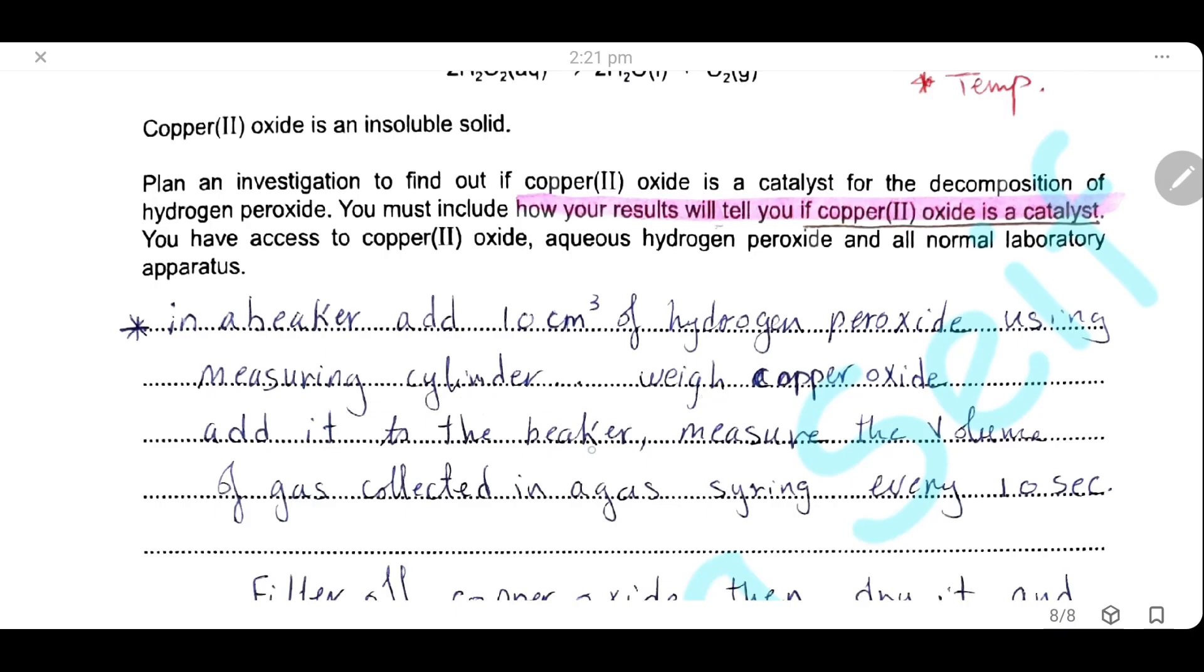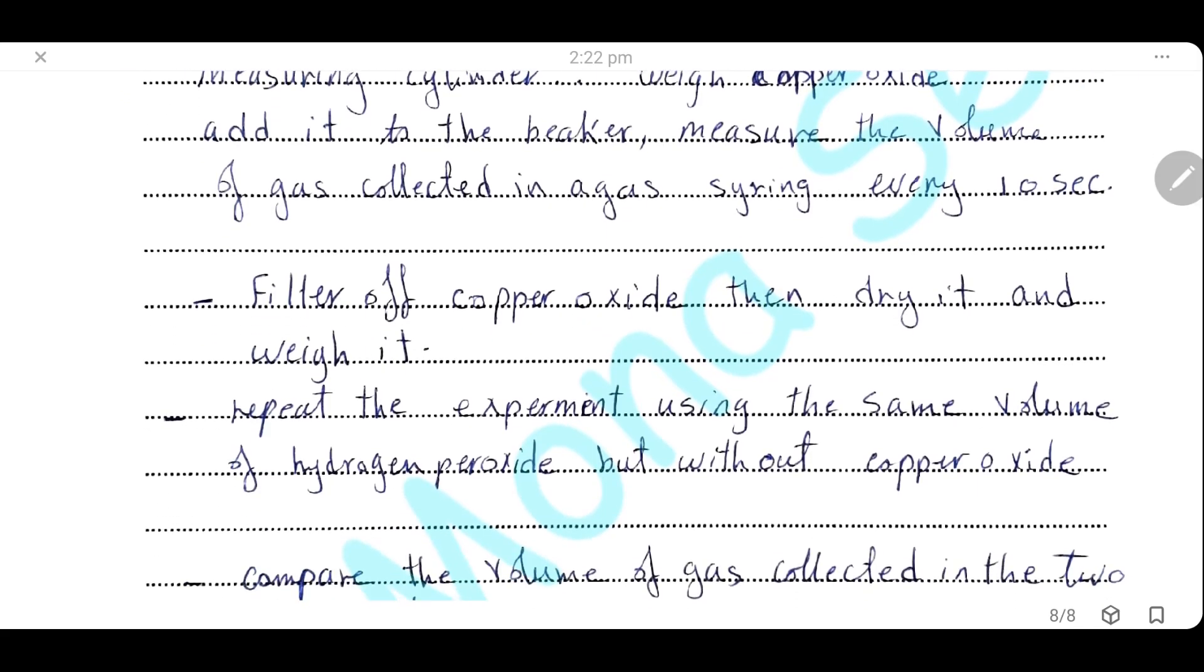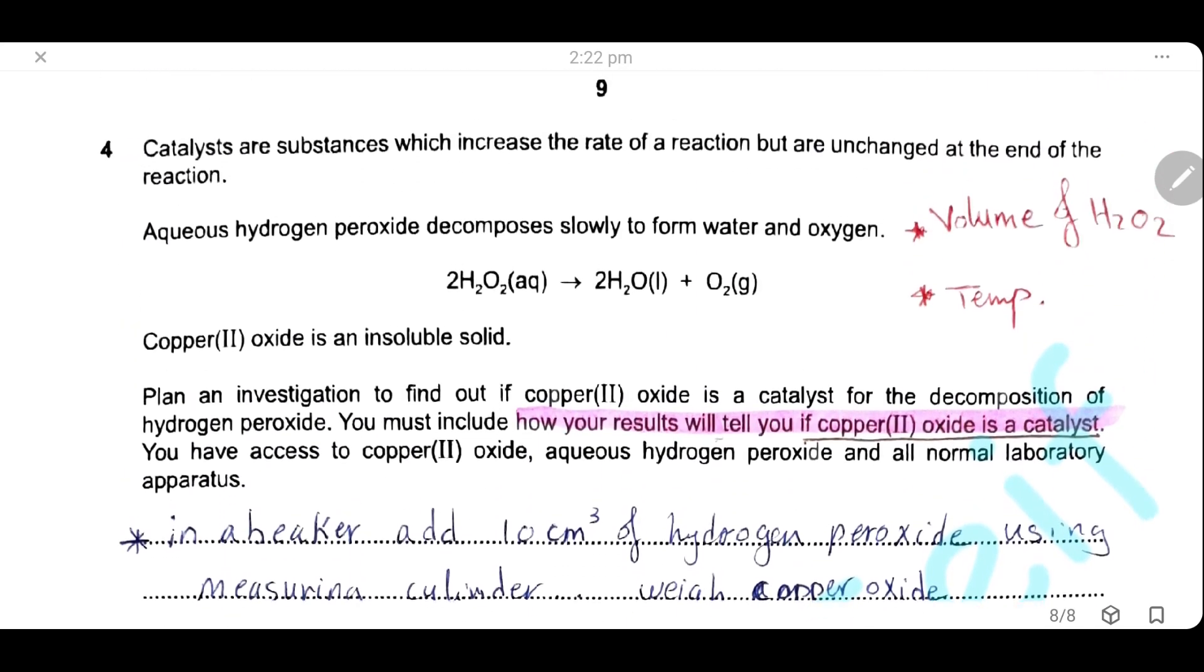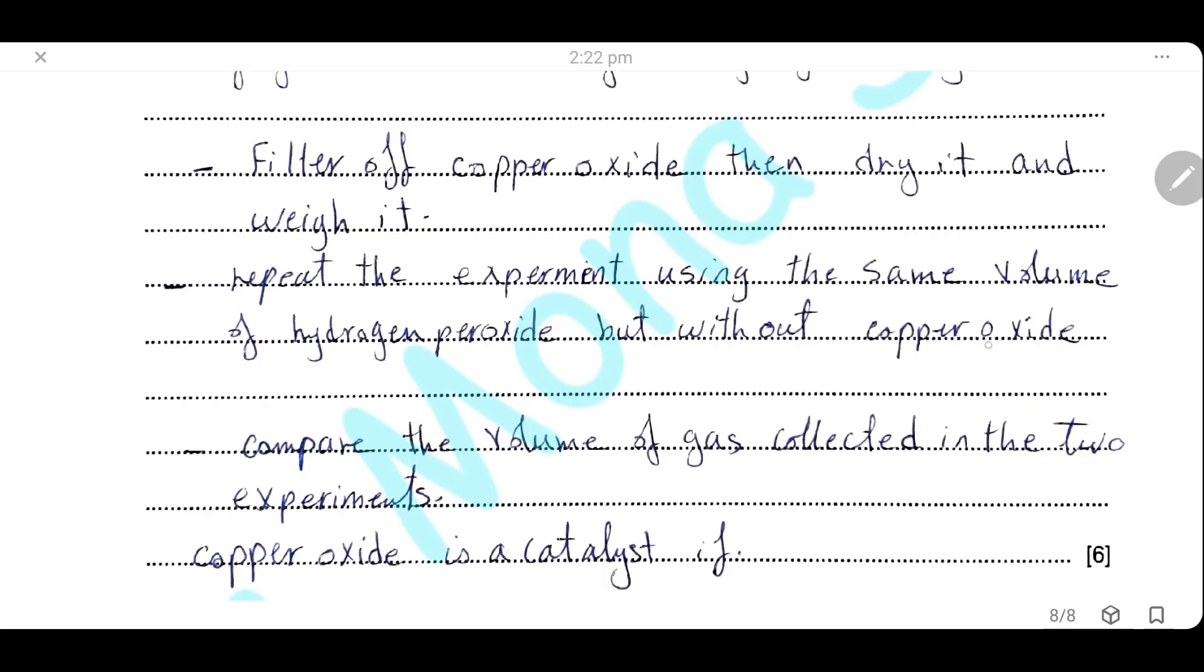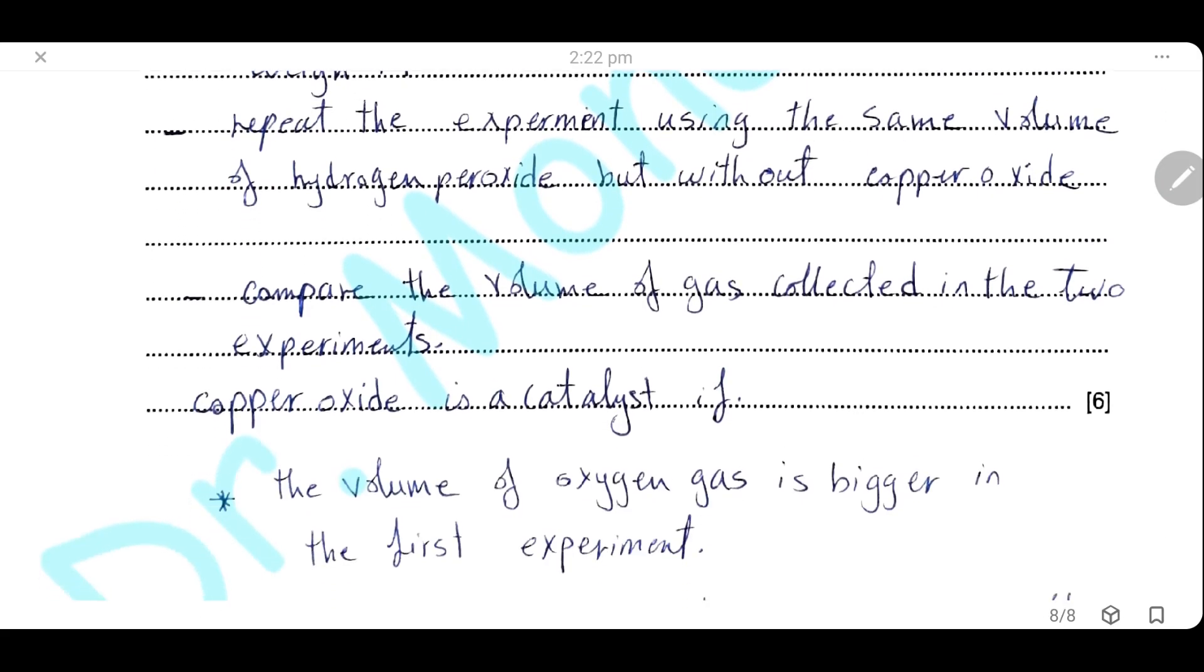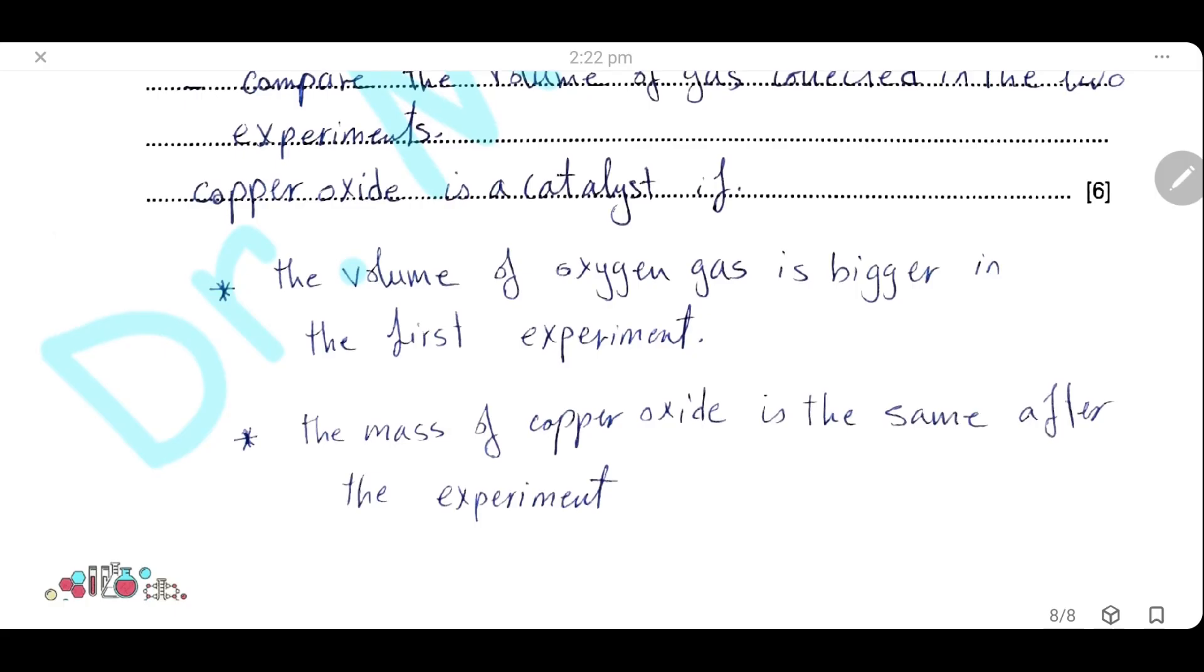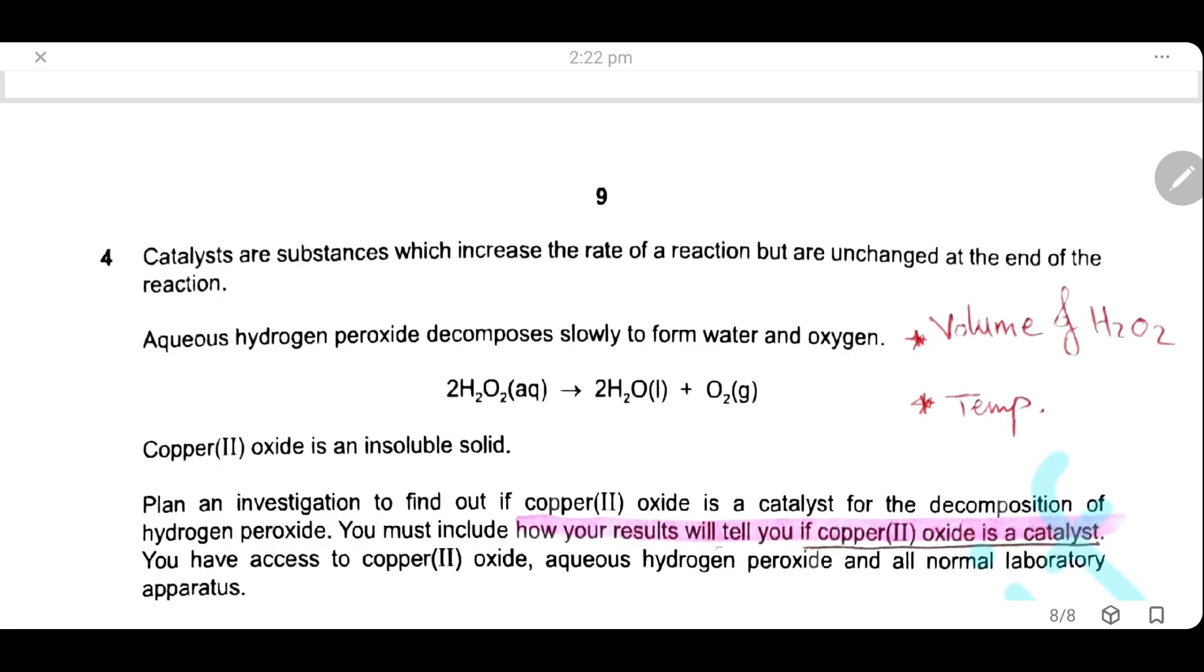Then, weigh copper oxide and add it to the beaker. Measure the volume of oxygen gas collected in the gas syringe every 10 seconds. Filter off the copper oxide, dry it, and re-weigh it. Then, we should repeat the experiment using the same volume of hydrogen peroxide at the same temperature but without copper oxide. You have to take care of the variables that should be kept constant here: the volume of hydrogen peroxide and the temperature. We will repeat the experiment without copper oxide using the same volume of hydrogen peroxide at the same temperature. Then, we will compare the volume of oxygen gas collected in the two experiments. Copper oxide could be a catalyst for the decomposition of hydrogen peroxide if the volume of oxygen gas collected is higher in less time and the mass of copper oxide is the same after the experiment, and that indicates that the copper oxide is unchanged at the end of the reaction. That's how our results could tell if copper oxide is a catalyst.